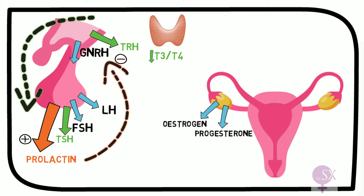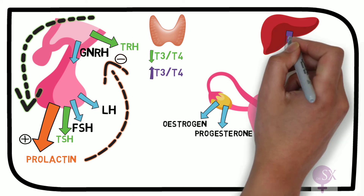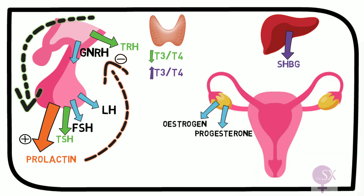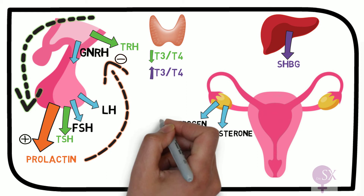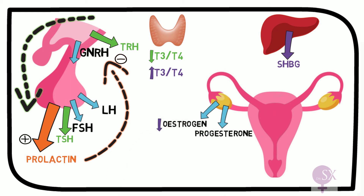In hyperthyroidism, where we have high levels of T3 and T4, these high levels of thyroid hormones trigger the release of sex hormone-binding globulin (SHBG) from the liver. SHBG binds with circulating oestrogen, therefore reducing the levels of free oestrogen and hence causing amenorrhea.